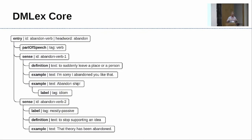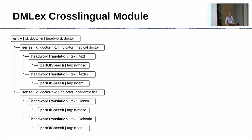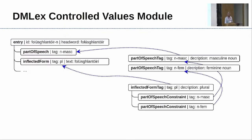Additional modules can be optionally implemented. The cross-lingual module supports modeling bilingual or multilingual dictionaries, adding data types for representing translations and annotating them with labels such as part-of-speech. Another module handles controlled values — closed-list inventories of things like part-of-speech tags, usage labels, and tags for labeling inflected forms, which can be treated as hard constraints or not.